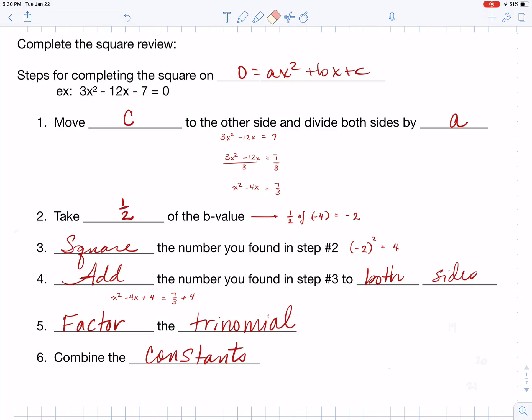Now you want to factor the trinomial. Now what trinomial am I talking about? Tri means 3, so this is my trinomial and I want to factor that. So you're going to factor, it's going to become x minus 2 quantity squared.